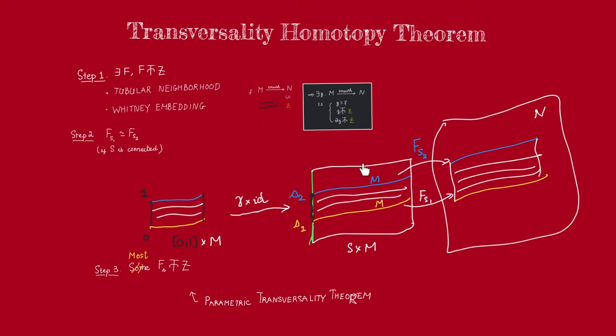Now, it remains to show that at least one of the maps in this family must be transversal to the given submanifold Z. Actually, we'll show something stronger. We'll show that most maps in this family are going to be transversal to this given submanifold Z. We'll do that in the next video.